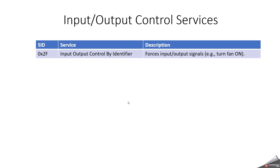Another category is IO Control Services, specifically Input Output Control Services. Here we have SID 0x2F — Input Output Control By Identifier. It will force input or output signals, for example turning a fan on or motor-related controls. All IO-related operations will be handled via the 0x2F service.